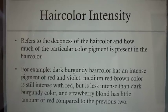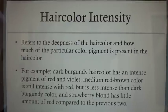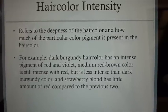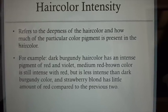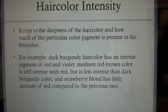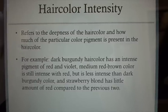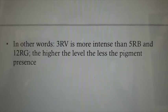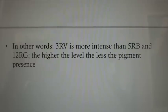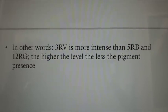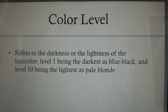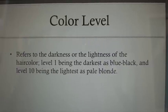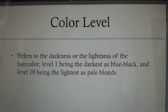Hair color intensity refers to the deepness of the hair color and how much of the particular color pigment is present in the hair color. For example, dark burgundy hair color has an intense pigment of red and violet; medium brown color is still intense with red, but less intense than dark burgundy. The strawberry blonde has a little amount of red compared to the previous two. In other words, 3RV is more intense than 5RB and 12RGE. The higher the level, the less pigment is present. Color level refers to the darkness or lightness of the hair color, with Level 1 being the darkest as blue-black and Level 10 being the lightest as pale blonde.